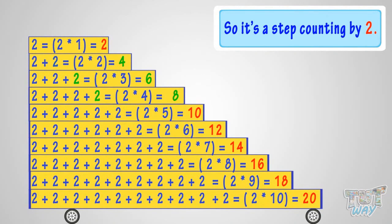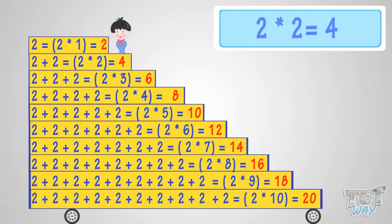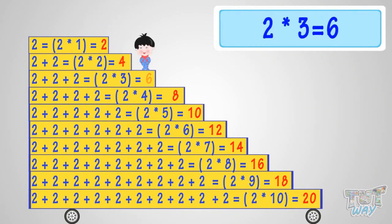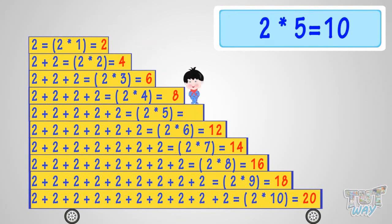So let's revise what we have learned. Two times one is two. Two times two is four. Two times three is six. Two times four is eight. Two times five is ten.